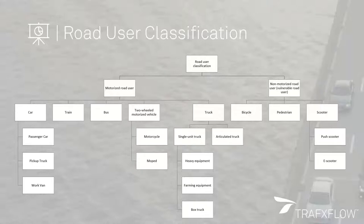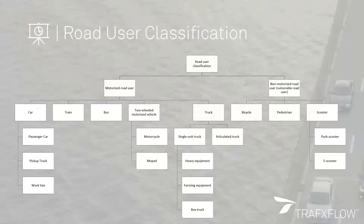On the other side of the road user classification — and this is probably something more interesting for us here in Europe — we are able to distinguish between various non-motorized road users, or what we often call vulnerable road users. They could be bicycles or cyclists, pedestrians, and scooters. Interestingly, we are also able to distinguish between push scooters and e-scooters. Many of our clients are bigger cities within Europe, all facing the same challenge of scooters and e-scooters getting more and more popular, and our studies are able to help them very much in this domain.